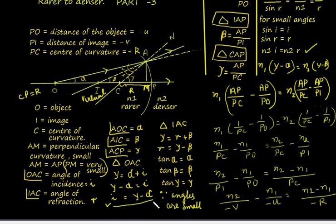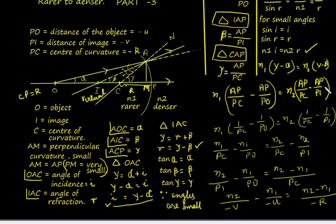We now substitute for angles i and r. We have i equals gamma minus alpha, and R equals gamma minus beta. Substituting expressions for gamma, alpha, and beta: N1 into (AP/PC minus AP/PO) equals N2 into (AP/PC minus AP/PI). AP is common on both sides, so this becomes N1·(1/PC minus 1/PO) equals N2·(1/PC minus 1/PI). Expanding the brackets: N1/PC minus N1/PO equals N2/PC minus N2/PI.